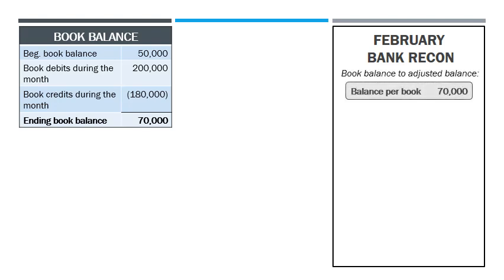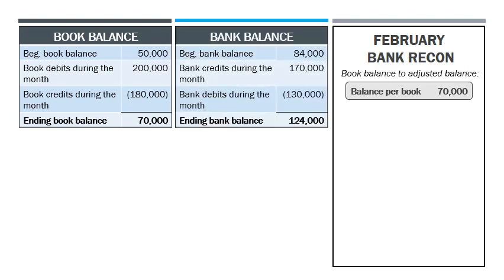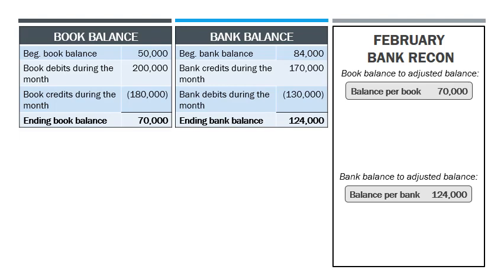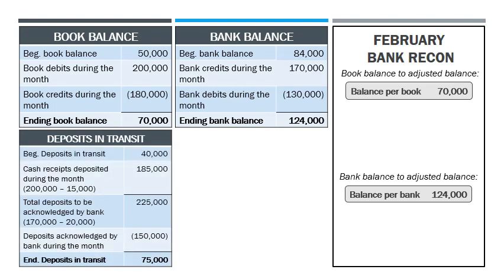To solve for the February cash balance per bank, the formula is: beginning bank balance, add bank credits during the month, less bank debits during the month, equals ending bank balance. To solve for the February deposits in transit, the formula is: beginning deposits in transit, add cash receipts deposited during the month, equals total deposits to be acknowledged by the bank. This is because deposits in transit from the previous period are expected to enter the bank's records in the current period along with current-period deposits. Then: total deposits to be acknowledged by the bank less deposits acknowledged by the bank during the month equals ending deposits in transit.